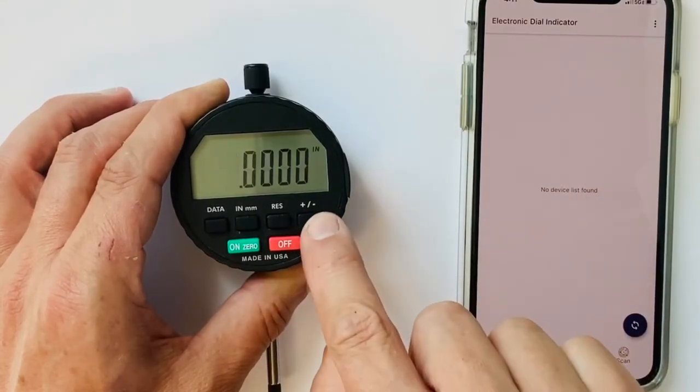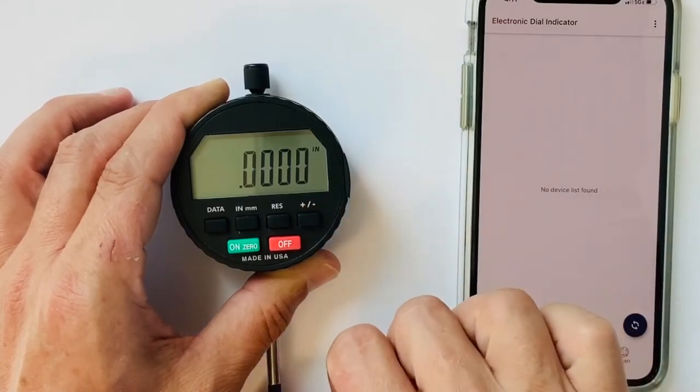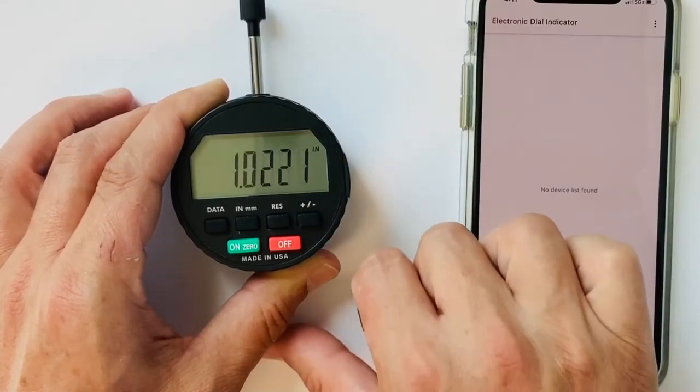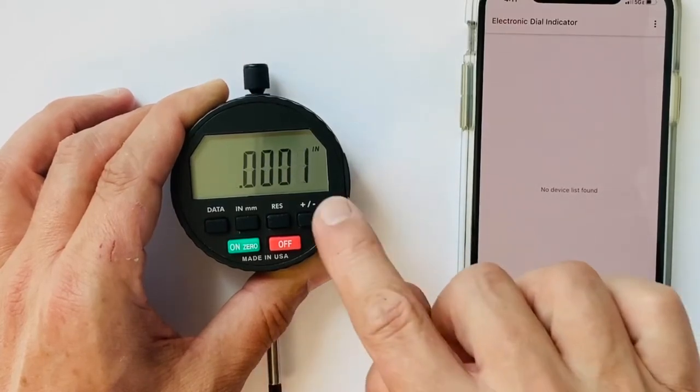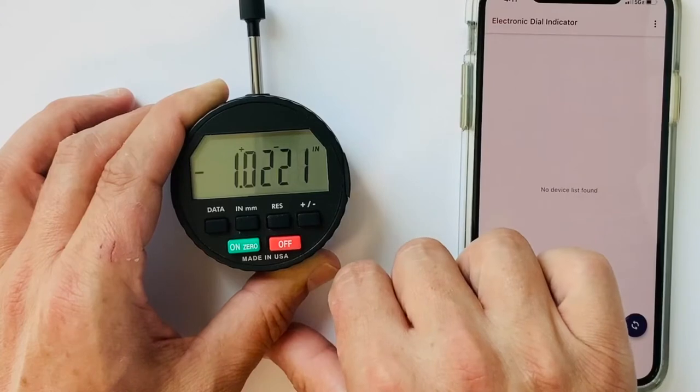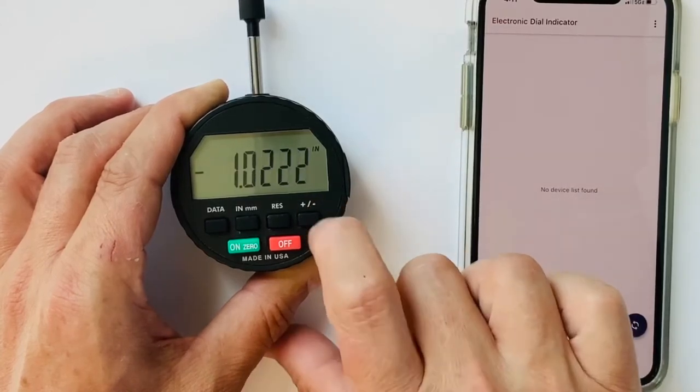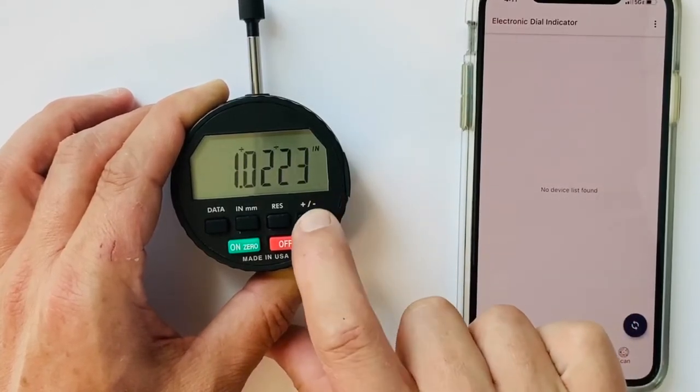You have your travel reverse which is plus minus. Out of the box it's plus on the inward stroke. You can reverse that. Now it's negative on the inward stroke so you can just press and toggle it back and forth.